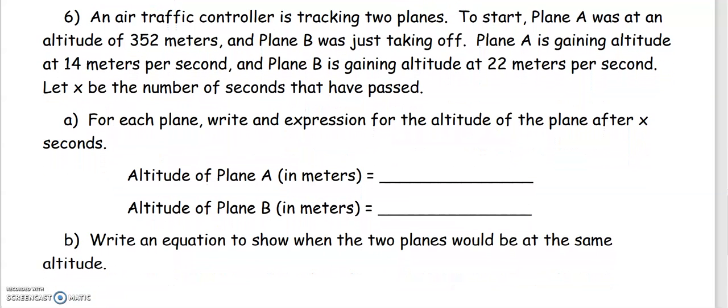An air traffic controller is tracking two planes. To start, plane A was at an altitude of 352 meters, and plane B was just taking off. Plane A is gaining altitude at 14 meters per second, and plane B is gaining altitude at 22 meters per second. Let x be the number of seconds that have passed.